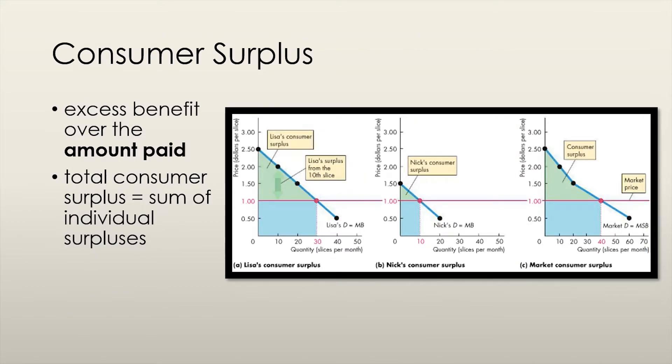Consumer surplus refers to the excess benefit received from a good over the amount paid for it. This means that when people buy something for less than it is worth to them, less than they value it, they gain some amount of surplus. Let's look at our two-person pizza economy again, but this time let's assume that each slice costs a dollar.